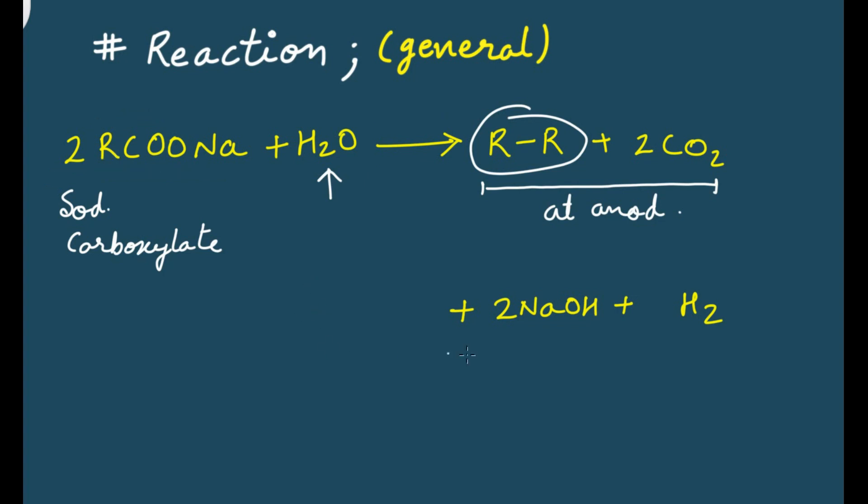And sodium hydroxide and hydrogen will be present at cathode. Now these two are gases, so they will be evolved, and at anode we will get pure alkane. That's how the reaction takes place.